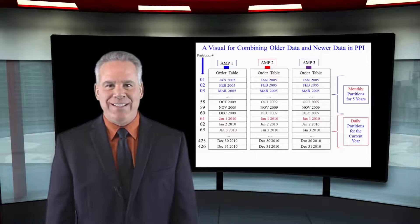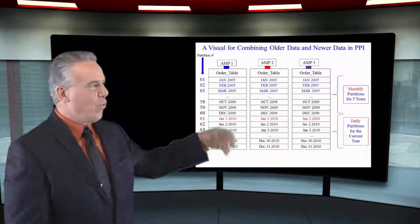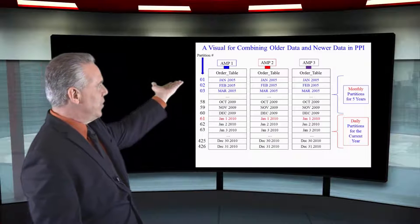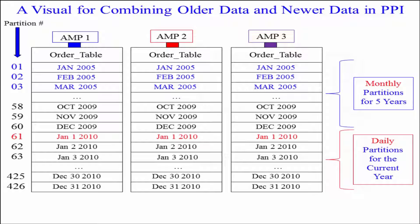It may be crazy, but you can see here we've got 2005 data each month, January, February, March. It just keeps going all the way down to 2009 to the very end of December. Each partition is one month of data spread across those amps.